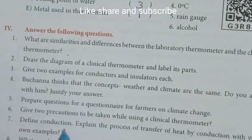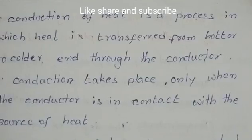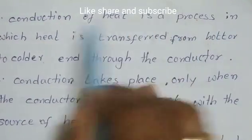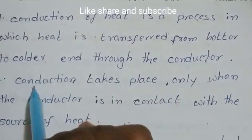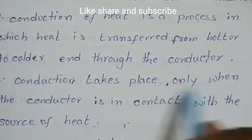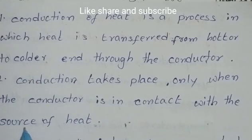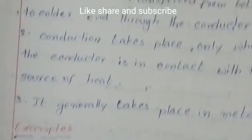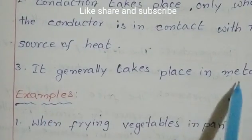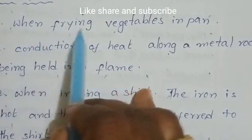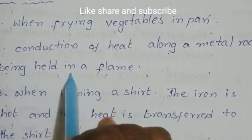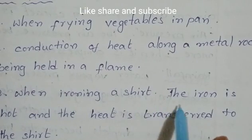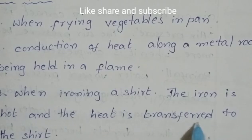Seventh question: define conduction and explain the process of transfer of heat by conduction with examples. Conduction of heat is a process in which heat is transferred from a hotter to a colder region through a conductor. Conduction takes place only when the conductor is in contact with the source of heat and generally occurs in metals. Examples: when frying vegetables in a pan; conduction of heat along a metal rod held in a flame; when ironing a shirt, the hot iron transfers heat to the shirt.